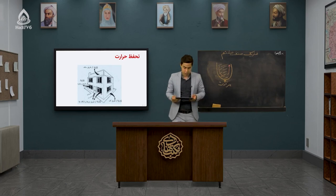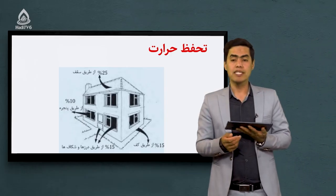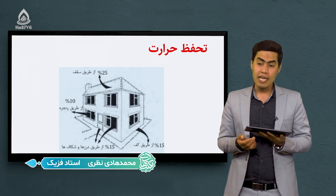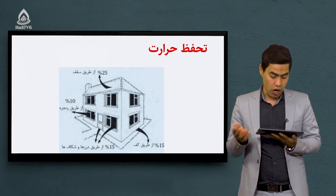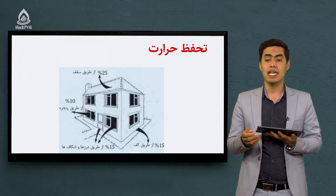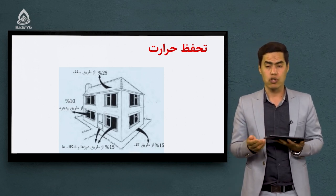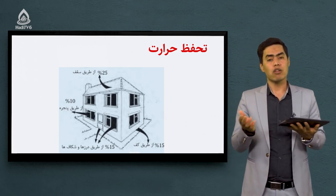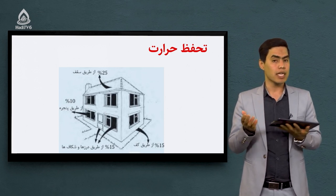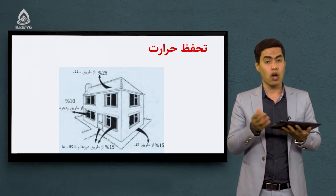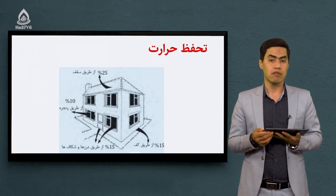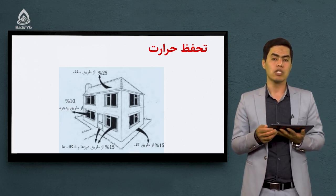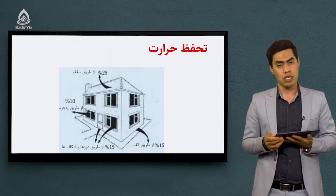25 فیصد انرژی حرارتی می‌تواند از طریق سقف‌ها اطلاف بشه، 15 فیصد از طریق کف خانه‌ها، و 10 تا 15 درصد از طریق درها و شکاف‌هایی که در درها وجود داره می‌تونه انرژی اطلاف بشه. از آن طرف که گفتیم منابع انرژی تجدیدناپذیره و ممکنه خلاص بشه، از طرف دیگه هزینه‌های بالایی در تأمین انرژی وجود داره. این ضرورت برای ما ایجاد می‌کنه که روش‌هایی پیدا کنیم تا از اطلاف انرژی جلوگیری کنیم.